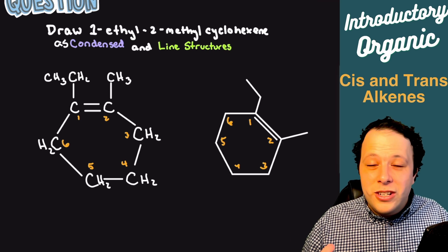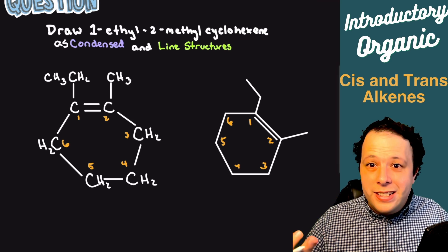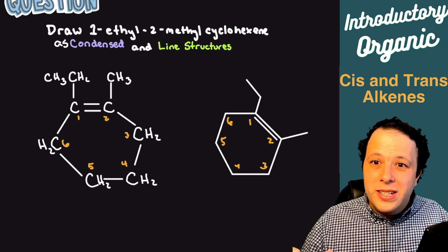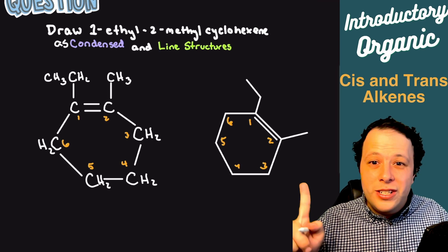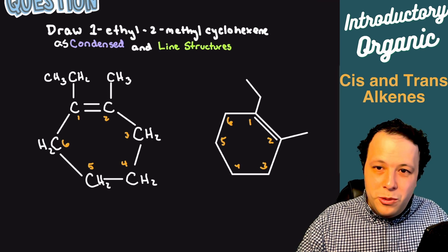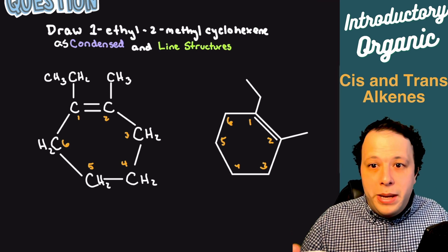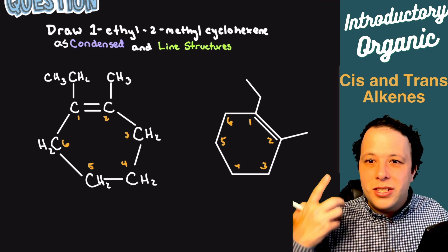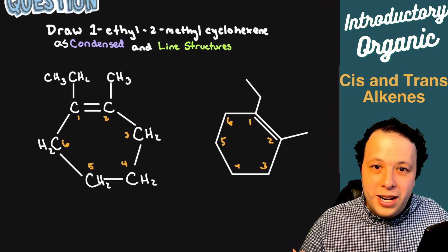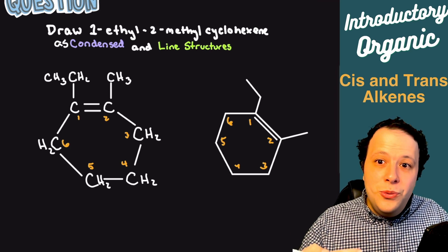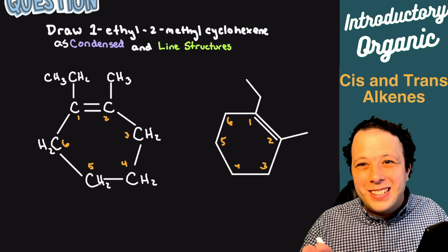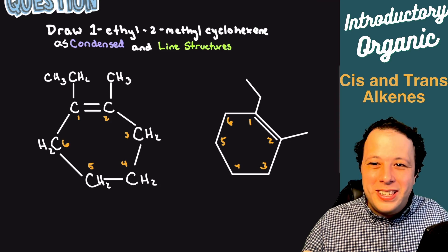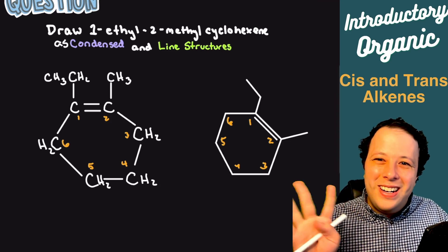So this has been how to draw all the different alkene structures. As you can see, it can get a little complicated and take a lot of work. Depending on your thought process, it might be easier to start with skeletal, then work backwards to the more expanded ones. Some people like starting as condensed and then going to expanded and line. It just depends on how your brain works through all those bonds. Do what's easiest for you to remember, and keep practicing. I hope that this video helped — thank you so much for listening, and I hope to see you all in the future.